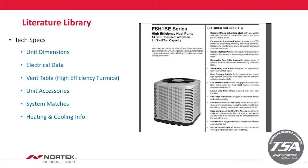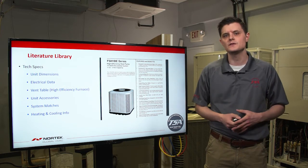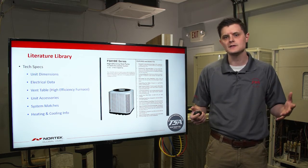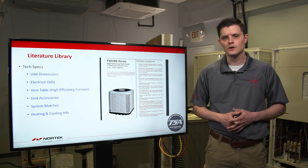The first thing is going to be the tech specs of the equipment. The information found in the tech specs is going to be unit dimensions, electrical data, the vent table if we're working on a high efficiency furnace, unit accessories, system matches, and heating and cooling information. This is a bullet point document that gives you those bits of information in a quick and easy fashion when trying to find information on the unit.